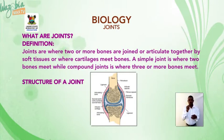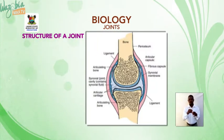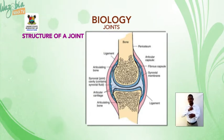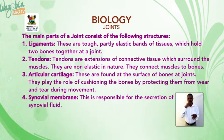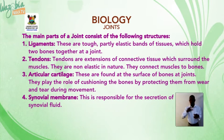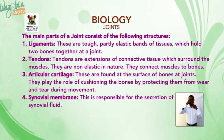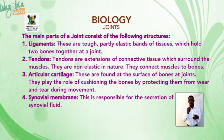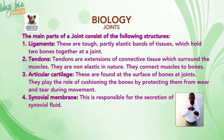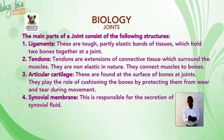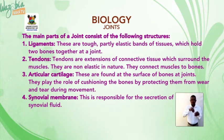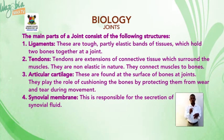Structure of a joint: the main parts or structures of a joint include ligaments — these are tough, partly elastic bands of tissue which hold two bones together at a joint. Tendons are extensions of connective tissue which surround the muscles; they are non-elastic in nature and they connect muscles to bone.